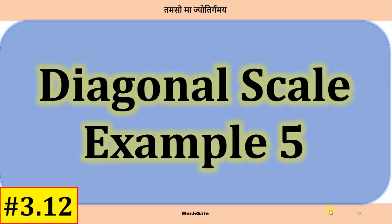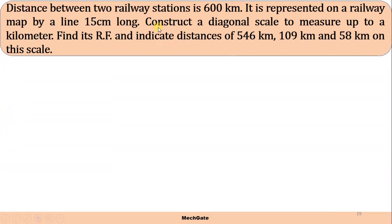Hey guys, welcome back to the channel. Let's solve another problem related to diagonal scale. Distance between two railway stations is 600 kilometers. It is represented on a railway map by a line 15 centimeters long.